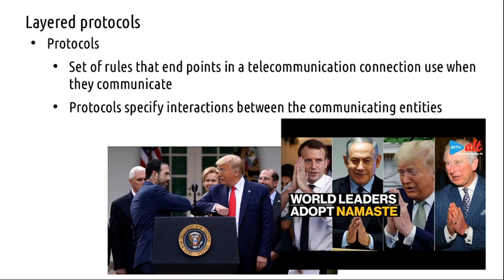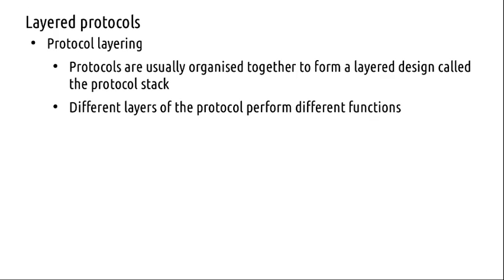So this is protocol — as we discussed last time, it specifies how different entities interact. An entity refers to two separate components which enter into communication. Now this pandemic has brought a lot of change in protocols — leaders used to hug and shake hands, but that has changed. Protocols are organized as layers — you divide the network into different layers, and each of these layers interacts along an interface involving some set of well-defined rules.